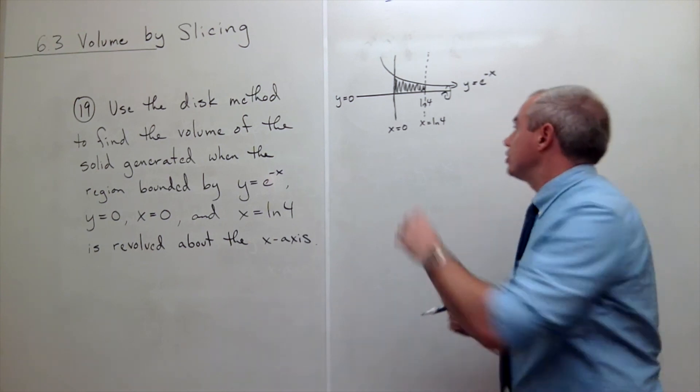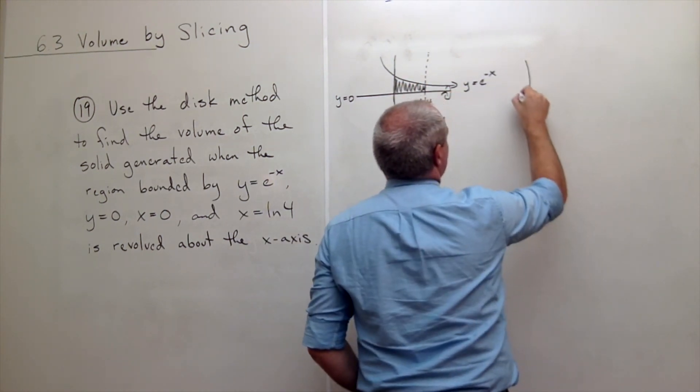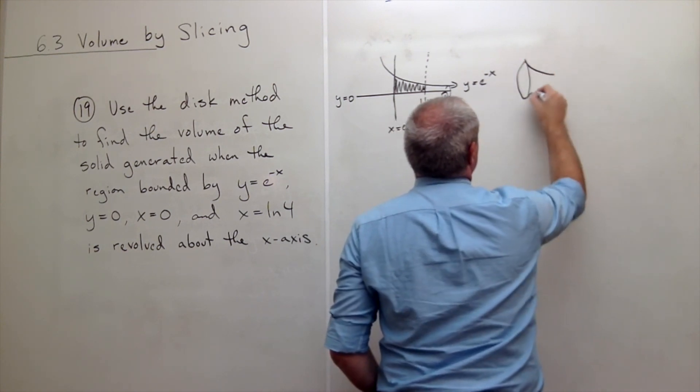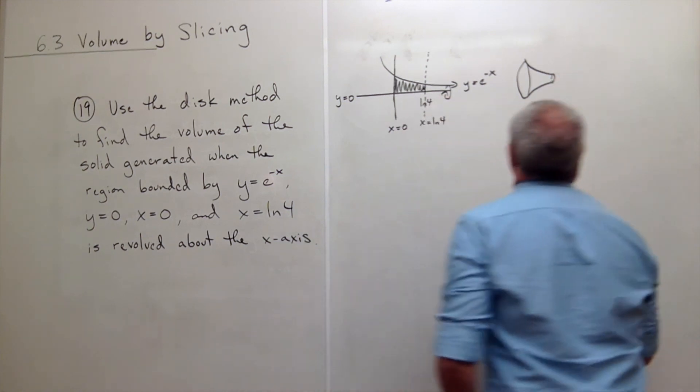So if we take that region and we spin it around the x axis, then we should get something that looks like... something like this.